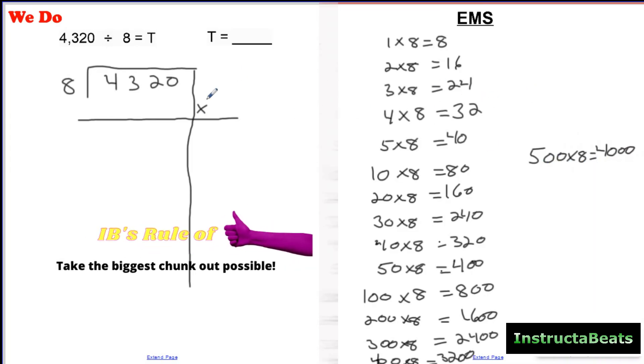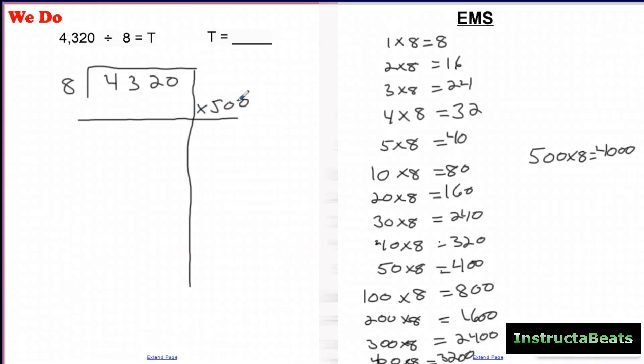I'm going to go ahead and take, again, the rule of thumb, take the biggest chunk possible. That way, you're going to do it in the least amount of steps. So, if I have 500 groups of 8 right here, let me write my steps: how many groups, multiply, subtract, repeat. When I multiply 8 times 500, you've already done that, that's 4,000. When I subtract, I get 320.